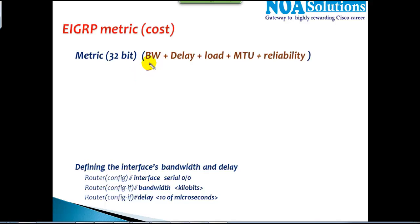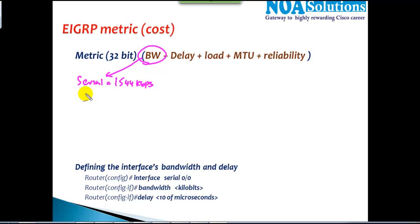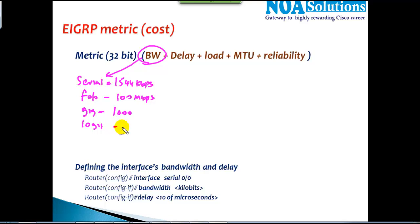Bandwidth is the speed of the link. The default bandwidth on serial links is 1.5 Mbps, which is 1544 kbps. Fast Ethernet interfaces have a default bandwidth of 100 Mbps, Gigabit Ethernet is 1000 Mbps, and 10 Gig interfaces have a default bandwidth of 10,000 Mbps.